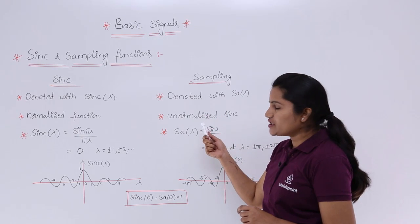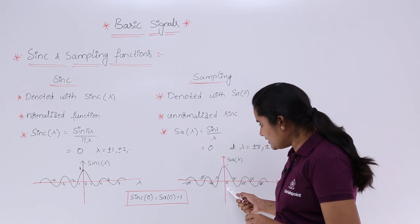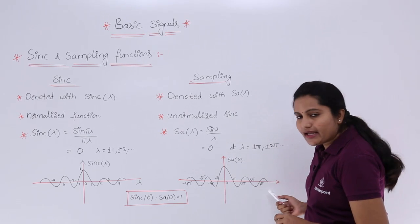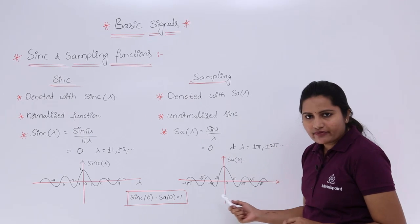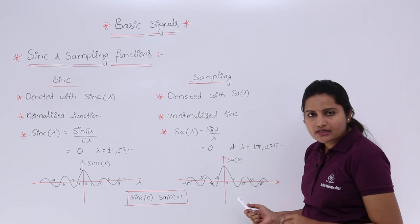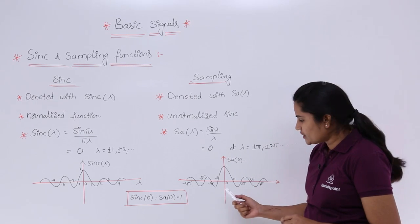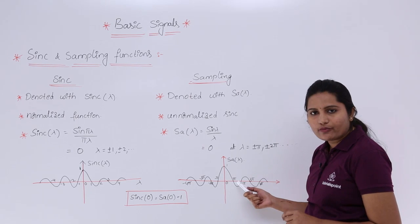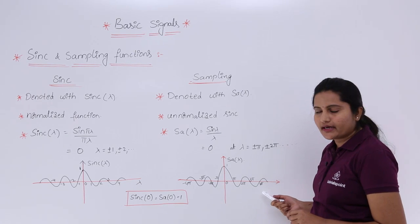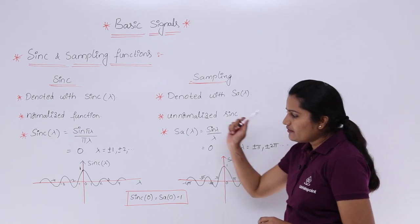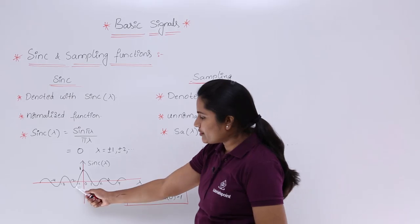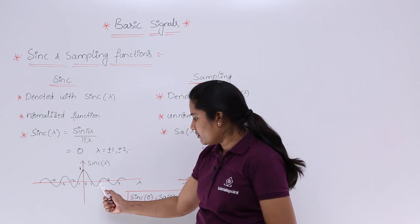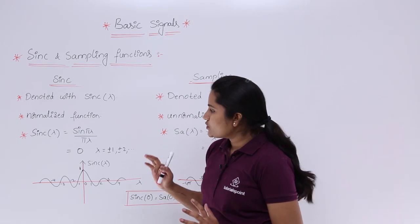This unnormalization affects the diagram — you can see the x-axis is affected. Due to unnormalization, for the sampling function you are going to write the x-axis in terms of pi, 2pi, and 3pi, whereas for the sinc function you write real numbers like 1, 2, 3, 4, and so on.